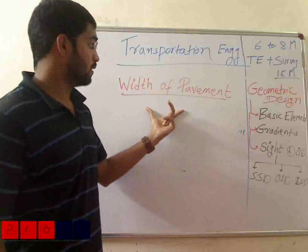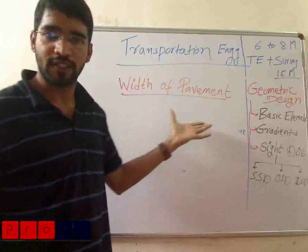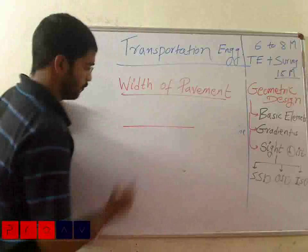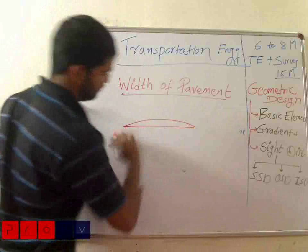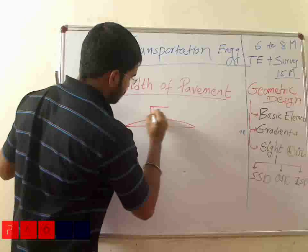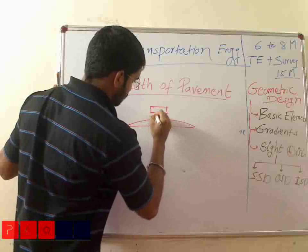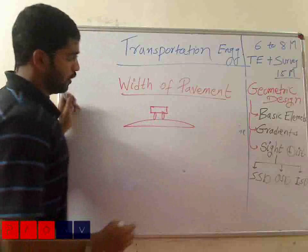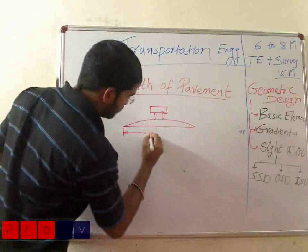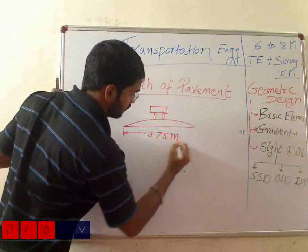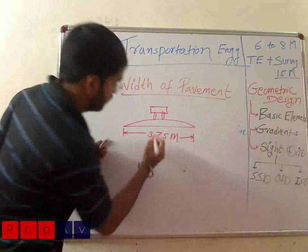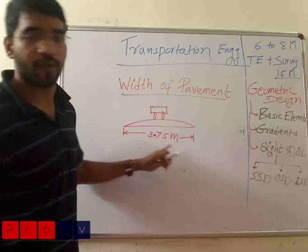Now let's deal with the width of a pavement, or the width of a carriageway. So we have a carriageway like this — I'll show you a cross section. We have a vehicle. The width of a carriageway for a single lane is 3.75 meters.